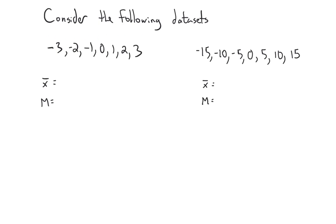Let's take this first data set and this second data set here. Pause the video and calculate both the mean and the median of each data set. Hopefully you've seen that the mean of this data set is zero — for every negative element there's an associated positive element, so everything cancels. And zero is in the middle, so it's the median too. Same with this one: zero is both the mean and the median. So if you were just given one number, a measure of center, it wouldn't be enough to differentiate both data sets. But looking at these, you can see that the right-hand data set is more spread out than the left-hand data set.